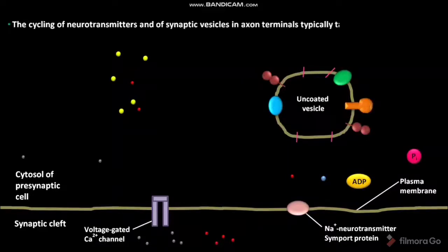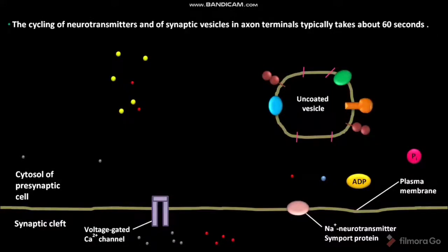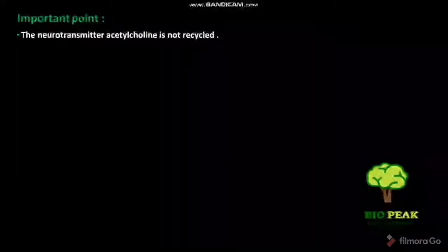The cycling of neurotransmitters and synaptic vesicles in the axon terminals typically takes about 60 seconds. An important point: the neurotransmitter acetylcholine is not recycled.